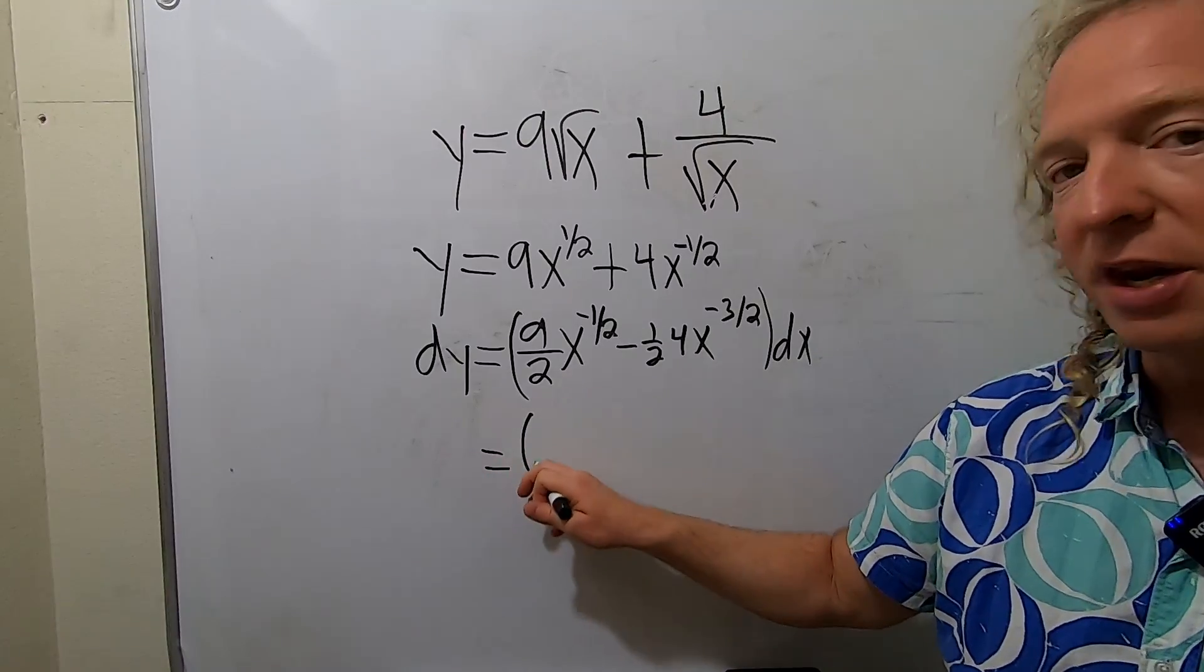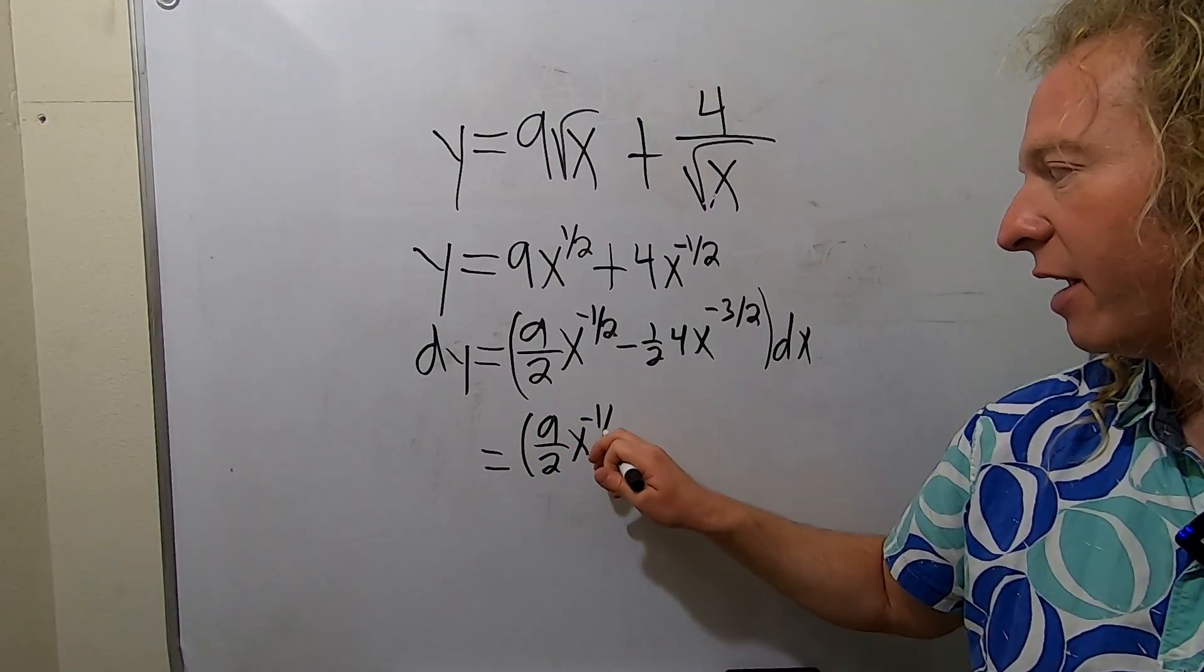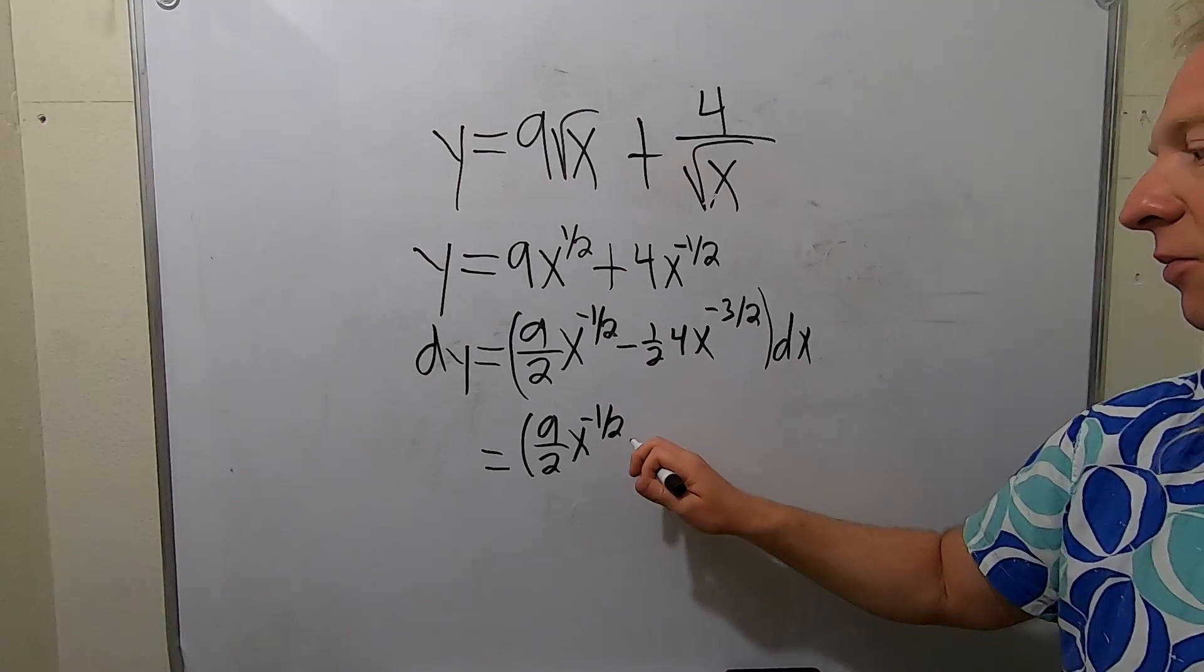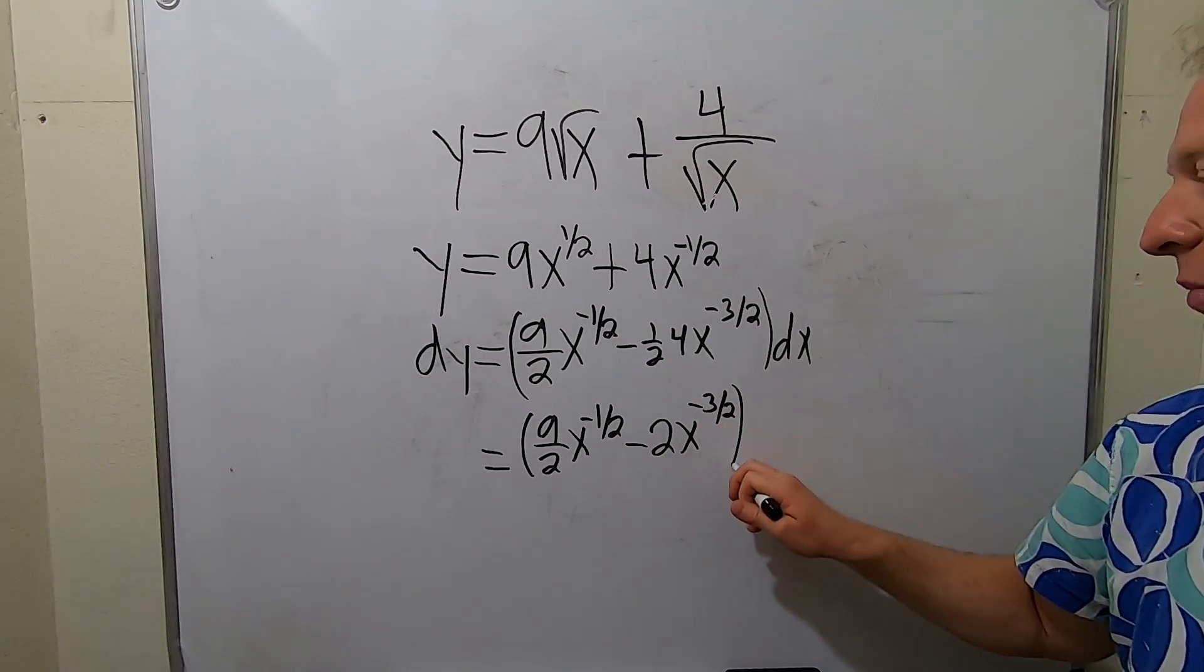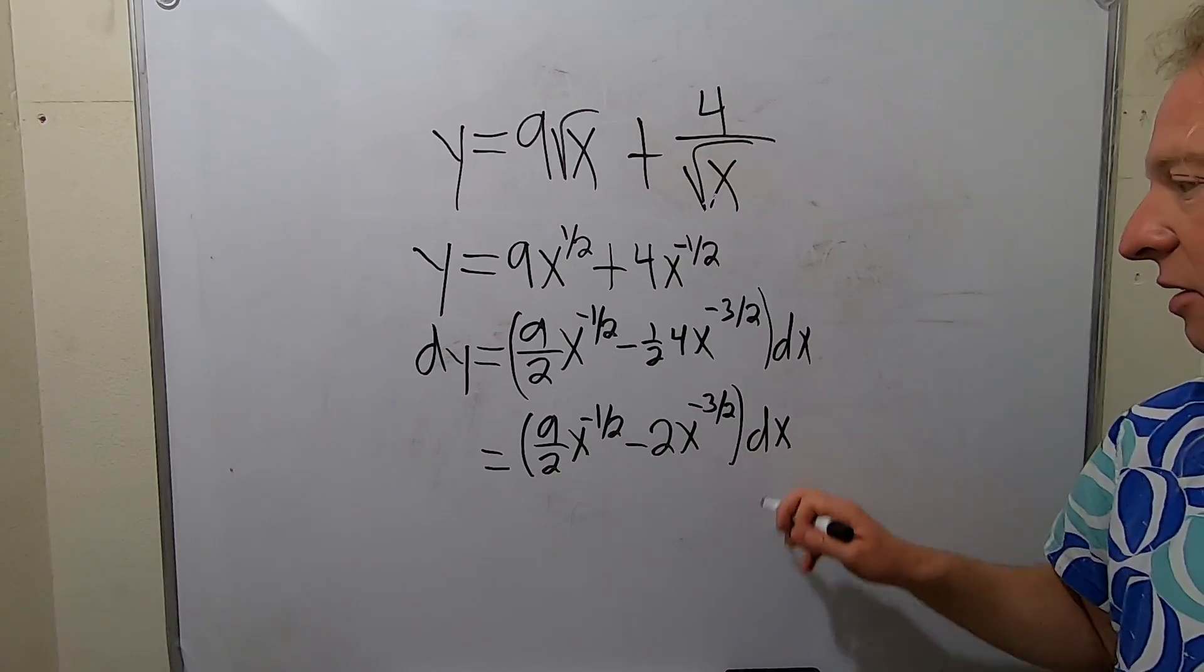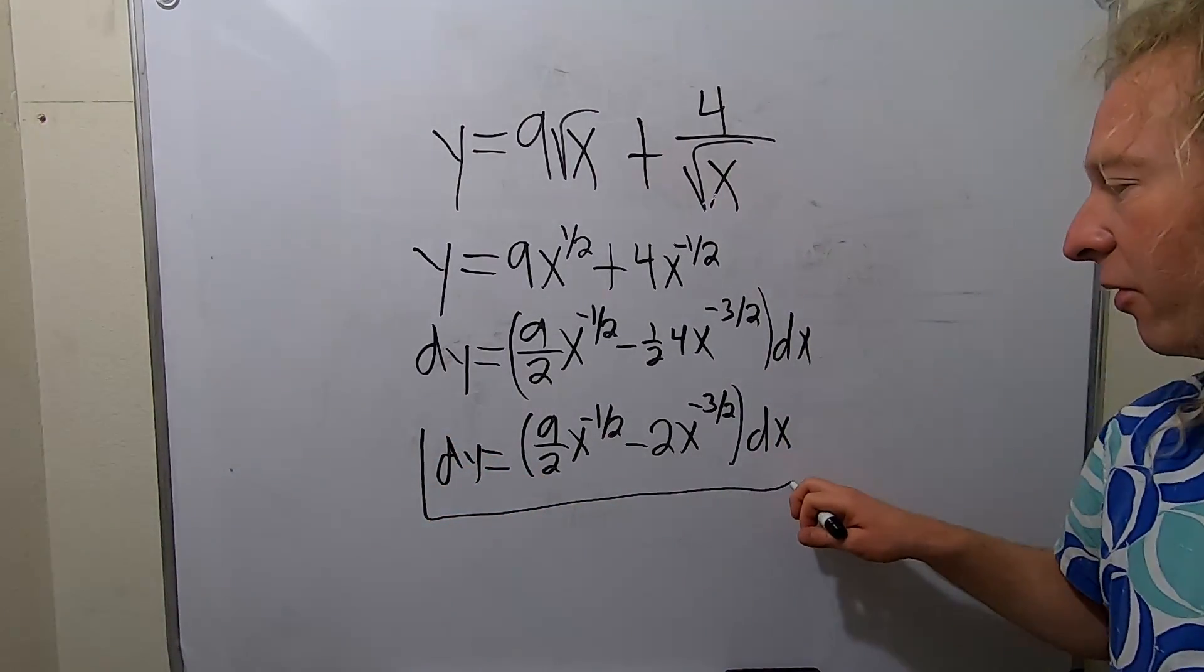So this is equal to 9 halves, x to the negative 1 half. This is minus 2, x to the negative 3 halves. And then we simply have the dx here. And that is the final answer.